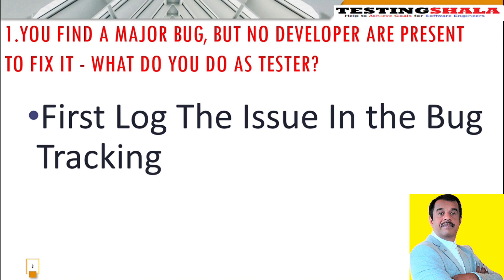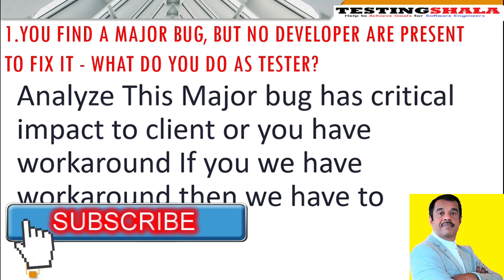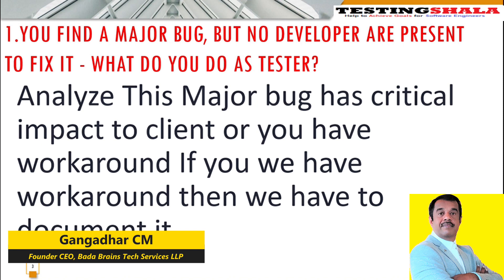The second thing we should do is analyze the criticality — what is the critical impact to the client. If the developer is not present and it cannot be fixed today, can we still ship the product with a certain workaround? If there is a workaround, we should document it as part of the release notes when shipping to the client. You have to clearly communicate this to the management team — your test manager or development manager — saying this is a major defect but there is minimal impact to the client, a workaround exists, and an immediate patch or hotfix can be planned for the next day.